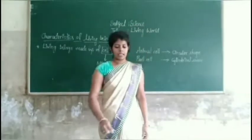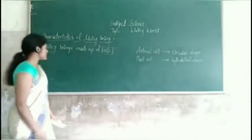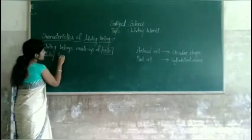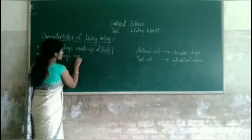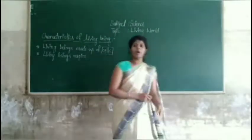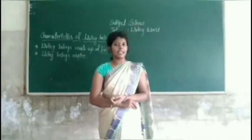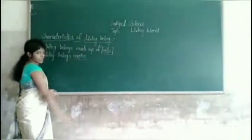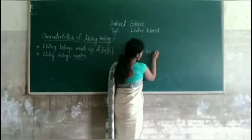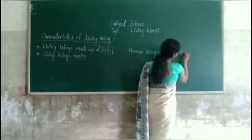The next characteristic is: living beings respire. The first characteristic was living beings are made up of cells. The second characteristic is living beings respire. Human beings respire through their nose and lungs.